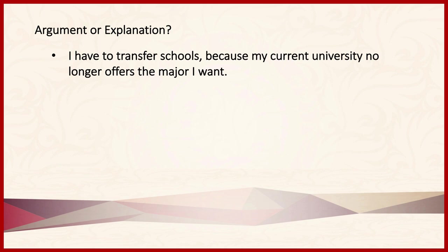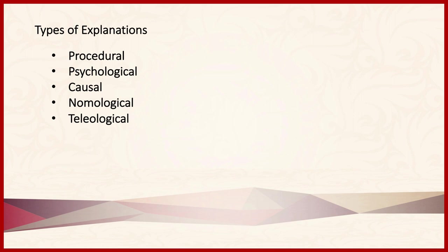Remember next that there are different kinds of explanations. A procedural explanation tries to explain how to do something. A psychological explanation, on the other hand, tries to explain some behavior by pointing towards some individual or group of individuals' psychological states. A causal explanation, of course, tries to explain how something causes something else. A nomological explanation tries to explain something by positing a law under which the phenomenon falls. And finally, a teleological explanation tries to explain the purpose behind something.